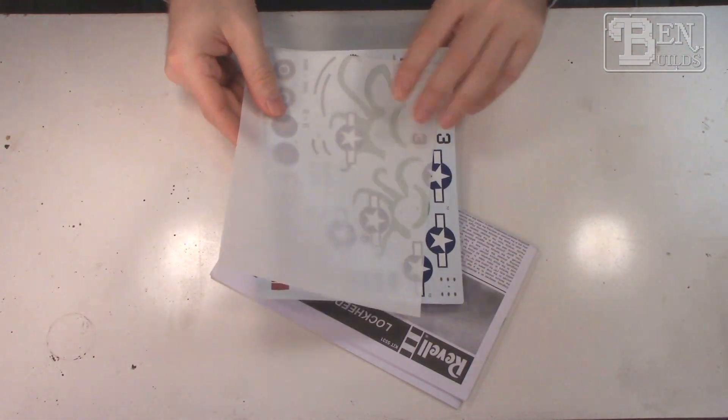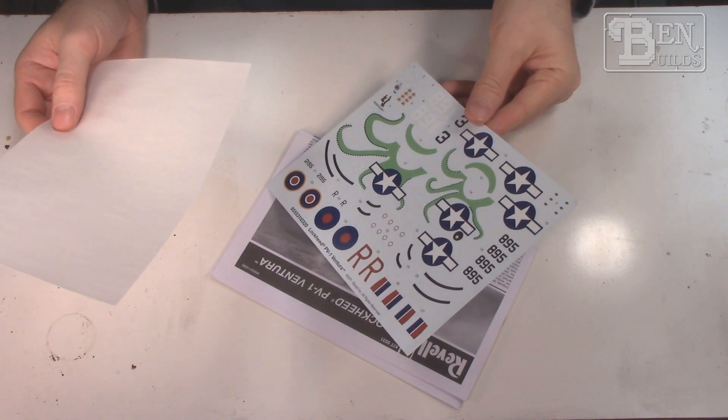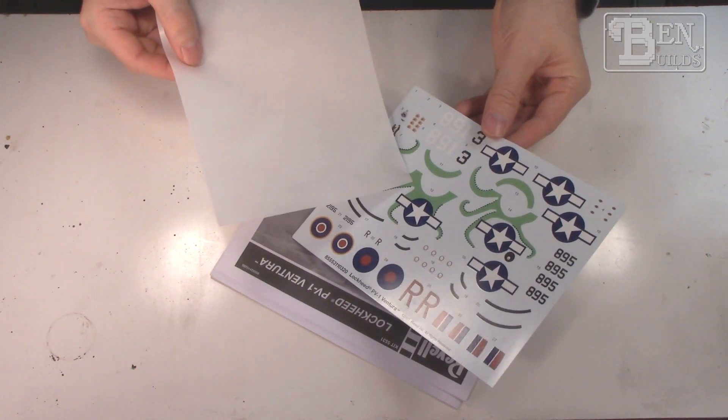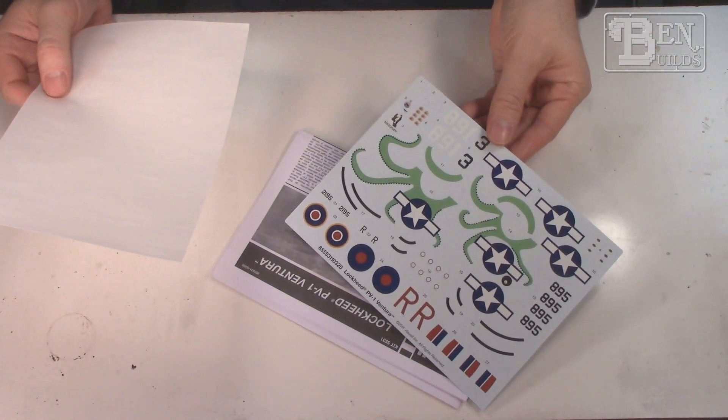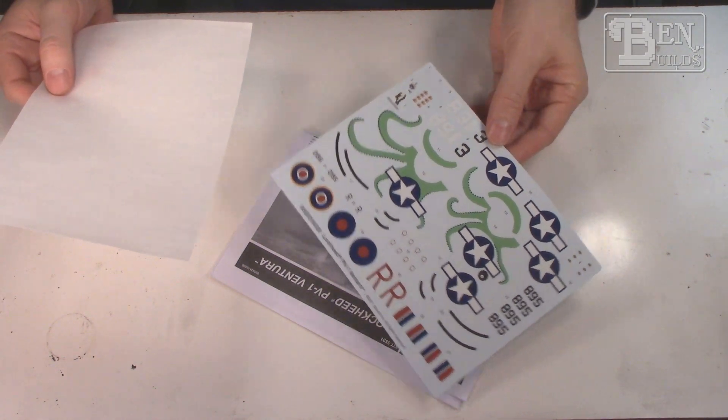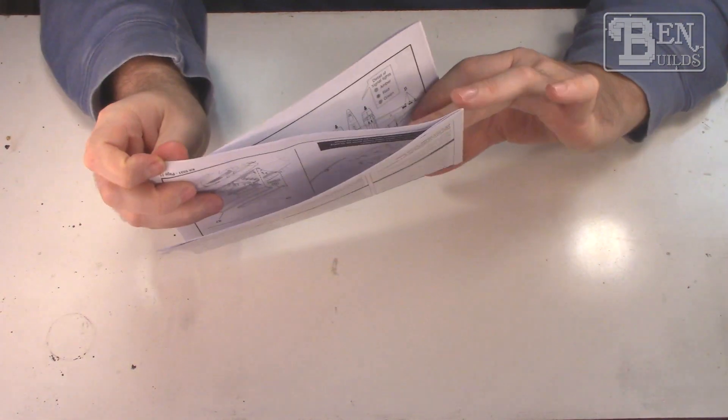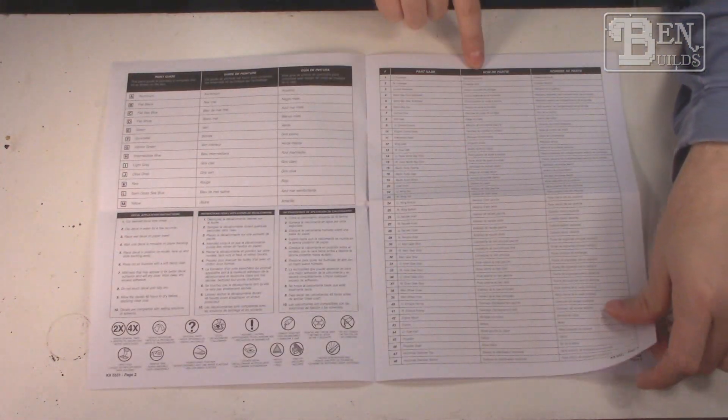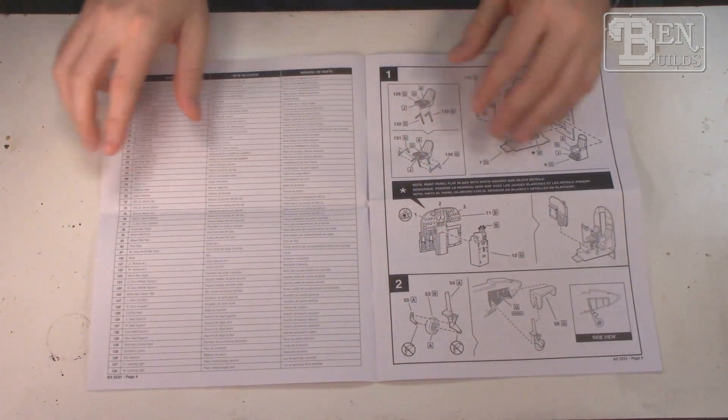I don't know much about the decal markings I'm going to be using. I've got to do a little research, but I don't like the fact that the octopus tentacles and the insignia are all included as one decal. I would have preferred the insignia to be separate just in case we want to do something different with that octopus. We've got our paint callouts and our parts breakdown here, always nice to know what you're doing and what these things are called.